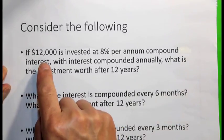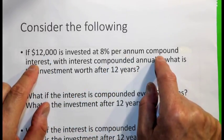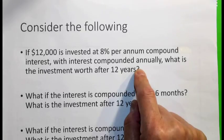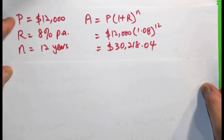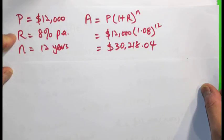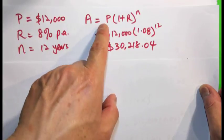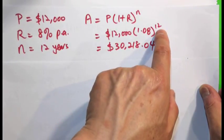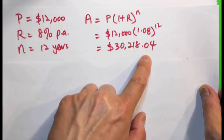Situation 1: $12,000 is invested at 8% per annum, compound interest, compounded annually. Let's work out what the investment is worth after 12 years. P is $12,000, r is 8% per annum, and n is 12 years. Using the formula A equals P times (1 plus r) to the power of n: P is $12,000, (1 plus r) is 1.08, to the power of 12. That gives us $30,218.04.